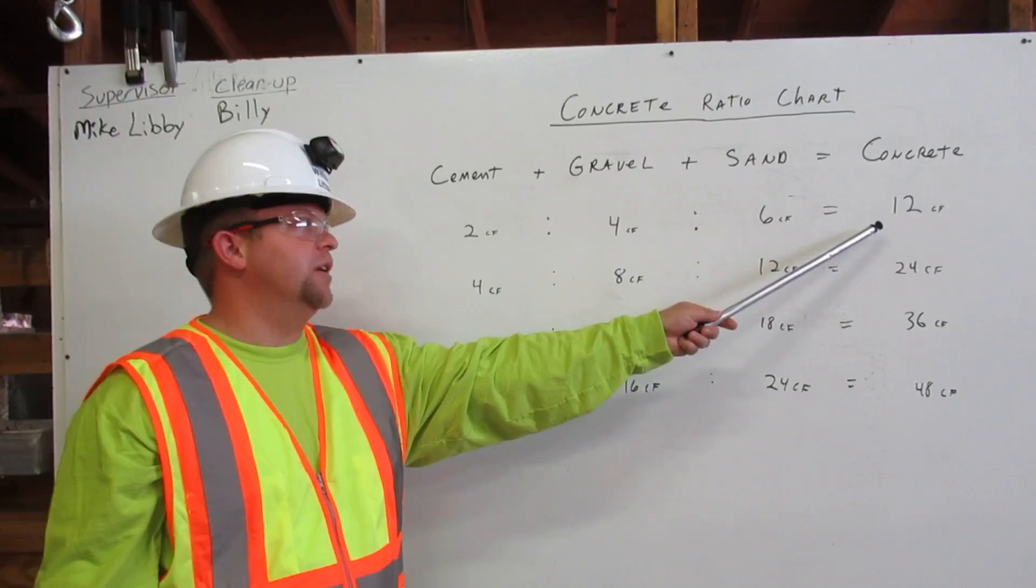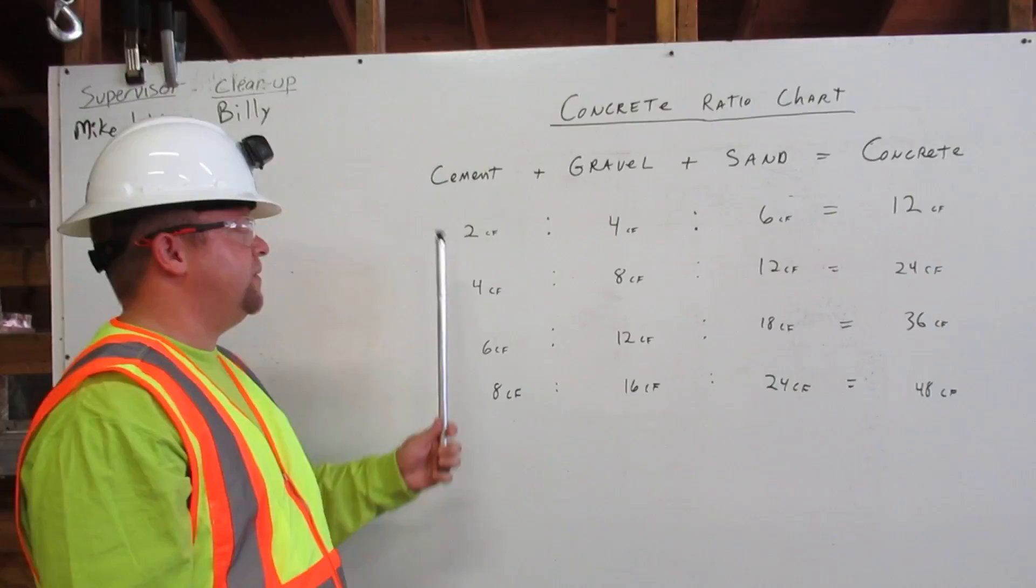If we need 36 cubic feet of concrete, we will mix 6 cubic feet of cement, 12 cubic feet of gravel, and 18 cubic feet of sand. That will give us 36 cubic feet of concrete. Thank you.